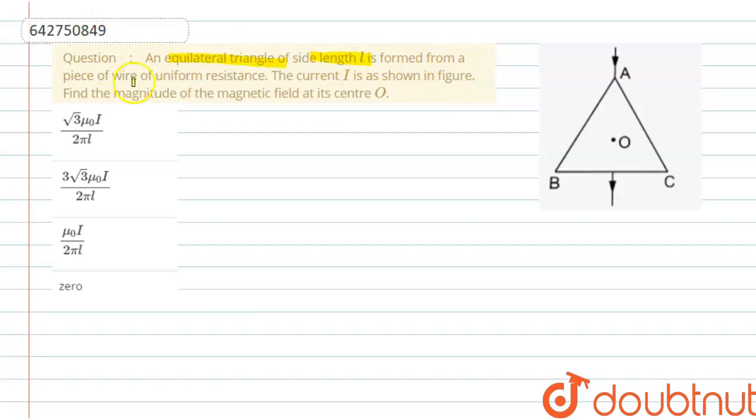The current I is as shown in the figure. Find the magnitude of the magnetic field at the center O. So we have four options here: root 3 mu naught I by 2 pi L, 3 root 3 mu naught I by 2 pi L, mu naught I by 2 pi L, and zero.